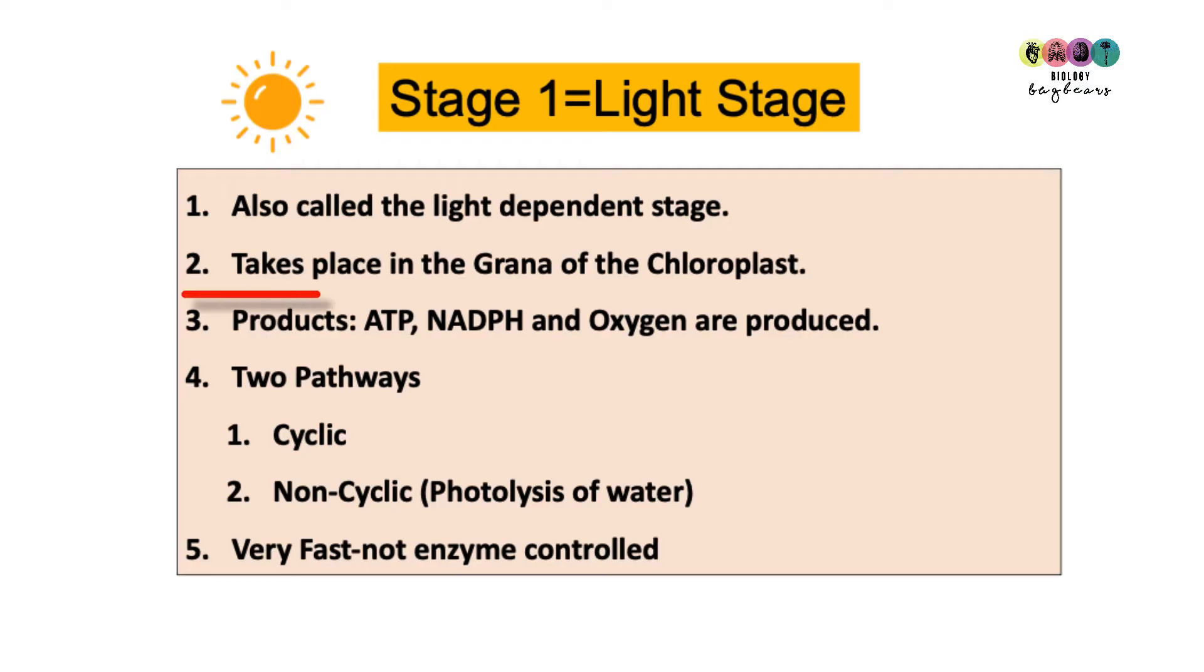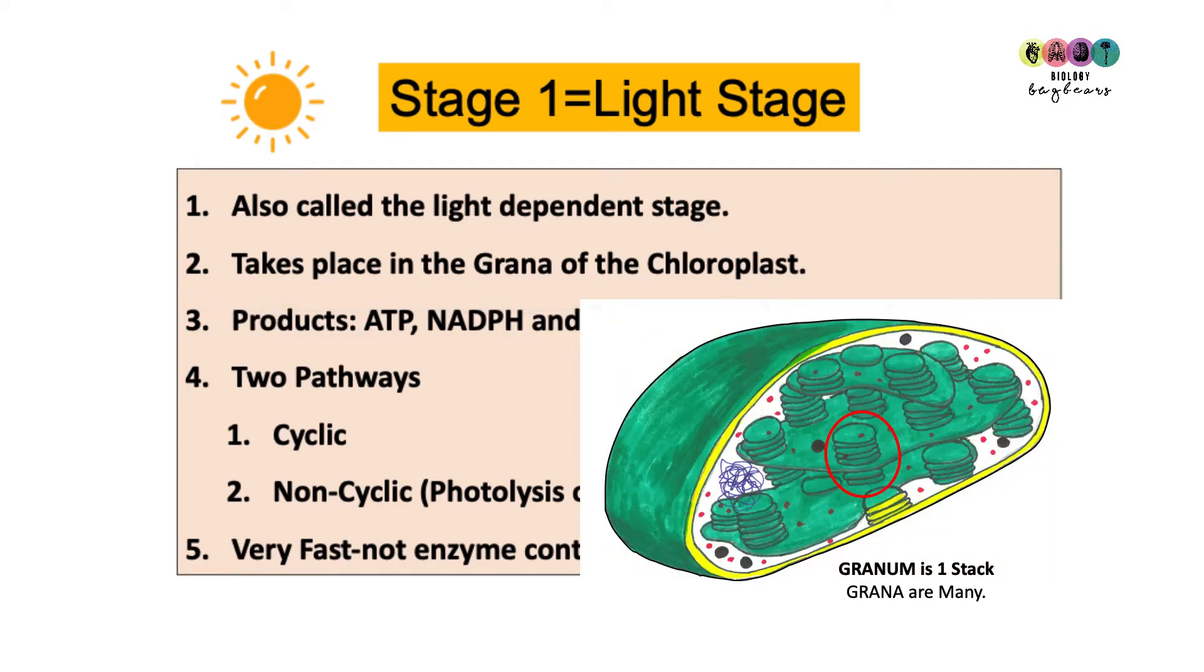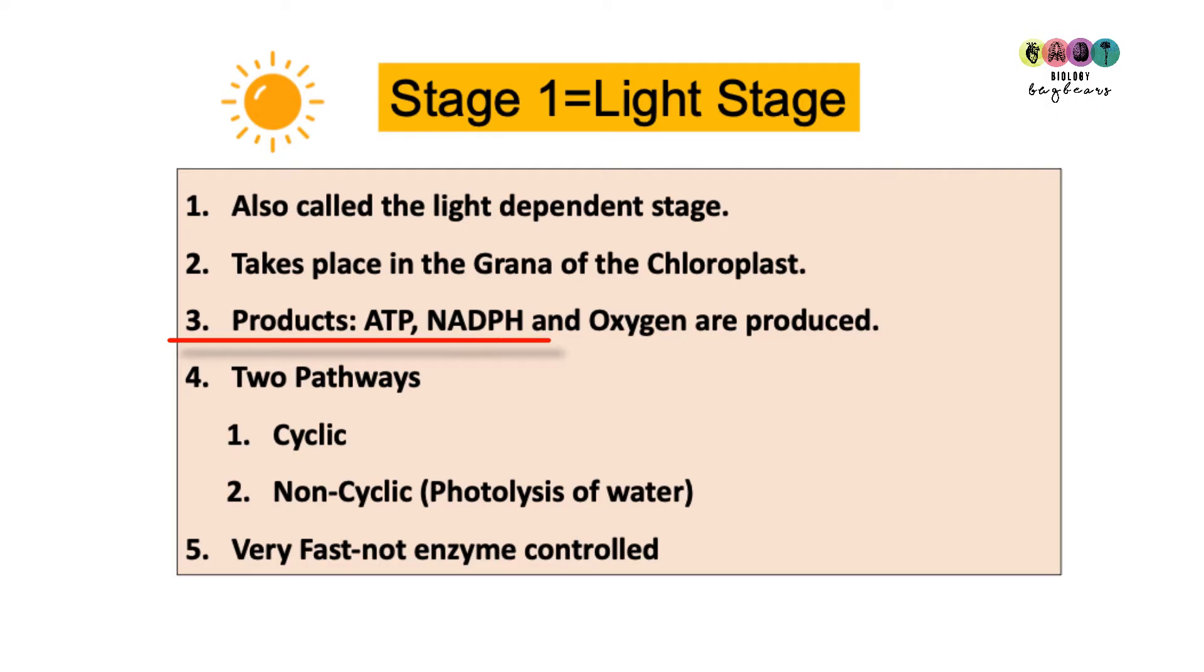These reactions take place in the grana of the chloroplasts. When you look inside the chloroplasts, you see those thylakoids, those green discs stacked on top of each other. One stack is known as a granum and many granum is known as grana. The three products of the light stage are ATP, NADPH, and oxygen.